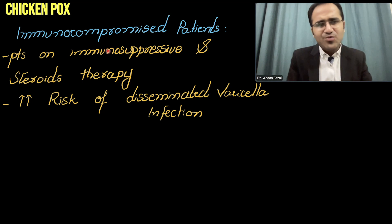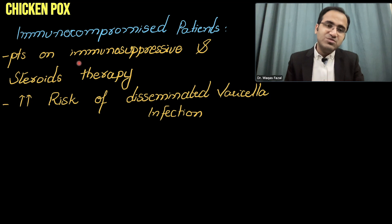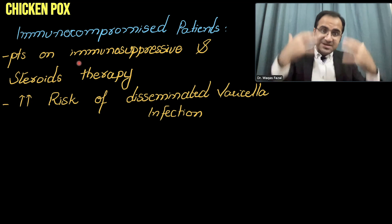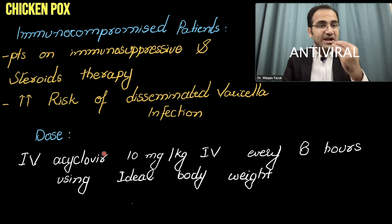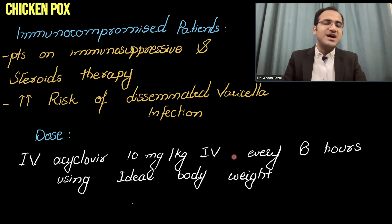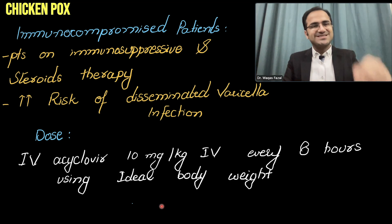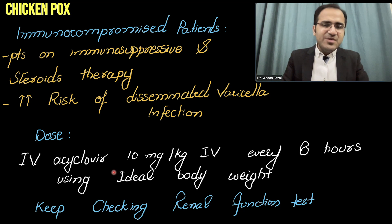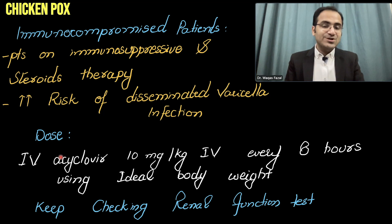Now coming to severely immunocompromised patients — patients on chronic steroid therapy, transplant patients on immunosuppressive therapy. These patients are at high risk of disseminated varicella zoster virus infection, which can be fatal. In such patients, IV acyclovir must be given: 10 mg/kg IV every 8 hours using ideal body weight. When giving IV acyclovir, keep monitoring renal function tests because acyclovir can crystallize in the kidneys and cause acute kidney injury.